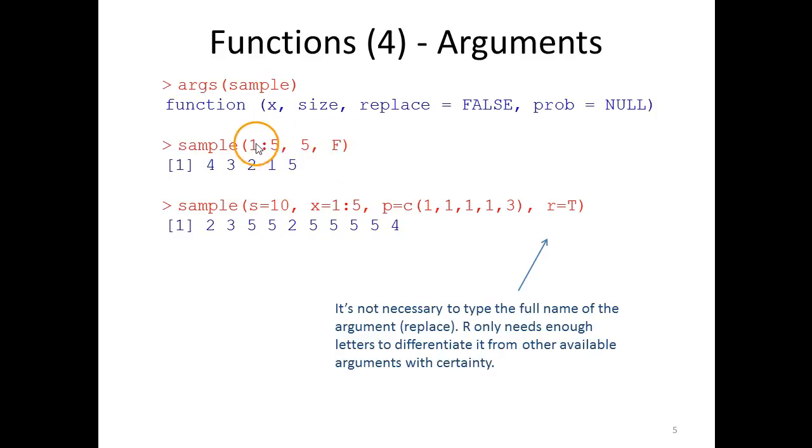And we write false here simply. This is interpreted as x equals one to five, size is five, and replace is false, and prob would get the default value null. In return we get a vector containing the numbers in a resampled order.